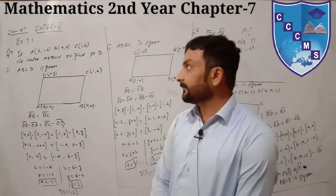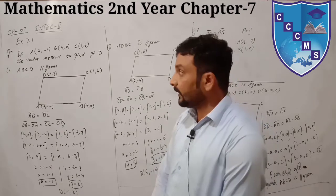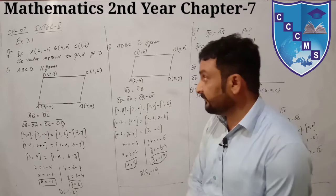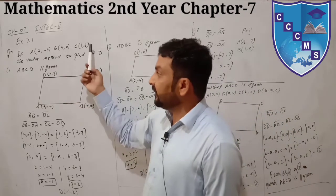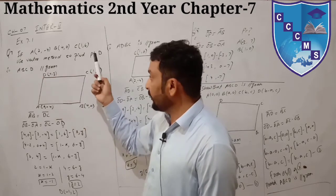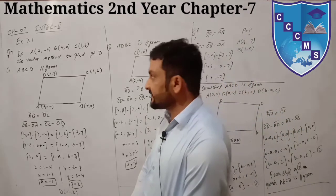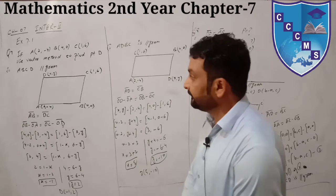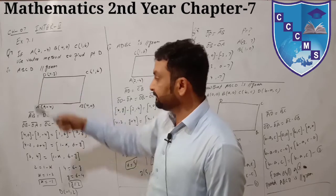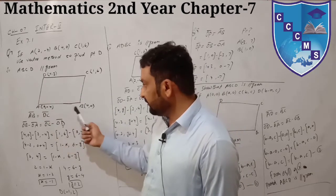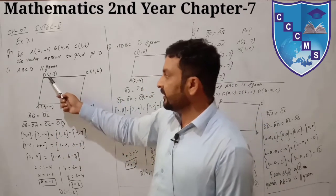Bismillah ar-rahman ar-rahim, Assalamu alaikum dear students. We have a half exercise, question number 7. Use vector method to find point D. A, B, C, D is a parallelogram. Given points A, B, C - find point D with coordinates x and y.